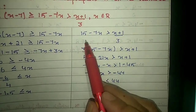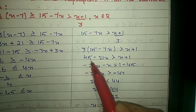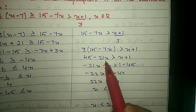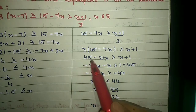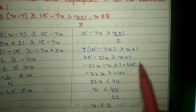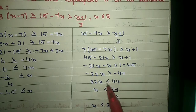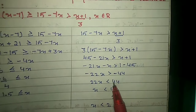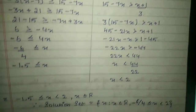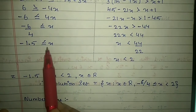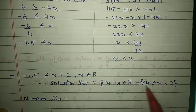Take the remaining half: 15 minus 7x > (x + 1)/3. Shift the 3 across for multiplication. Remove the bracket: 45 minus 21x > x + 1. Shift x to the left as minus x and 45 to the right as minus 45, giving minus 22x > minus 44. Remove the minus symbol and reverse the inequality: x < 44/22, so x < 2. Joining both: minus 1.5 ≤ x < 2, x belongs to real numbers. Write the solution set properly.